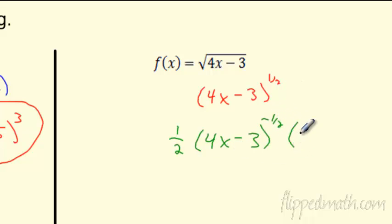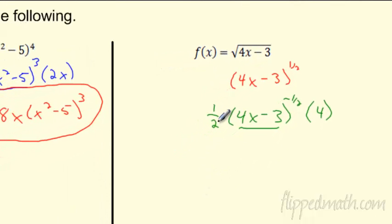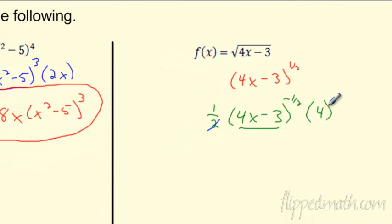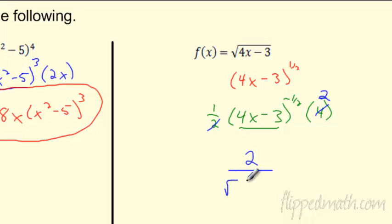Don't forget to multiply by the derivative of the inside grouping symbol — that's 4. Now rewrite it: a negative exponent moves it to the bottom. You can cancel: 1/2 of 4 is just 2. So the 2 stays on top, the square root goes to the bottom, and we've got √(4x-3). That is my derivative.